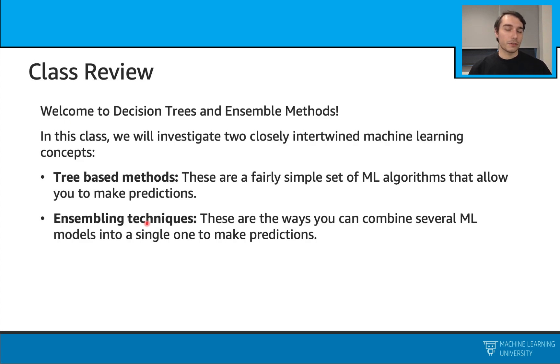Let's first make a quick rundown of our previous lecture. In our previous lecture, we made a bunch of definitions. We had these tree-based methods, which are simple tree-based machine learning algorithms to make predictions, such as classifications or regressions. We also had these ensembling techniques, which are special techniques to combine several machine learning models into a single one to make the same type of predictions.